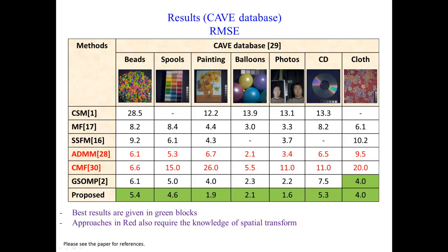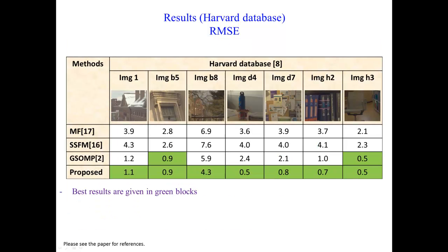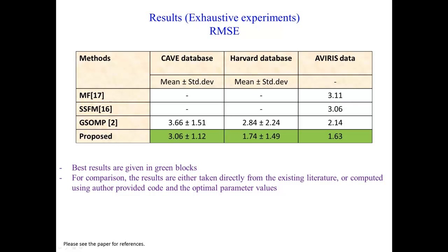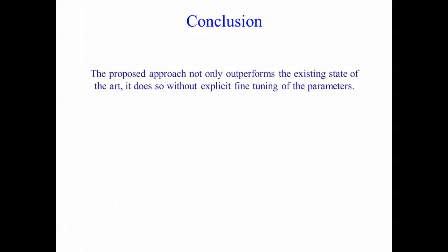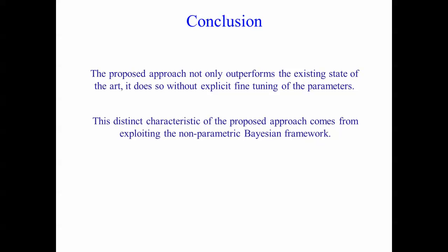The table shown in this slide benchmarks our approach on 7 images from the CAVE database. The given root mean squared error values are in the range of 8-bit images. This table displays results on 7 representative images from the Harvard database. We also show results of exhaustive experiments over the three public databases used in evaluation. The proposed approach is not only able to outperform the existing state of the art, it is able to do so without explicit fine-tuning of the parameters for any given image. This distinct characteristic comes from exploiting the nonparametric Bayesian framework.